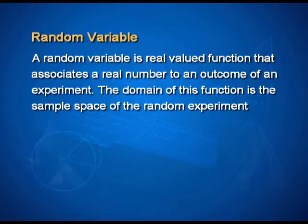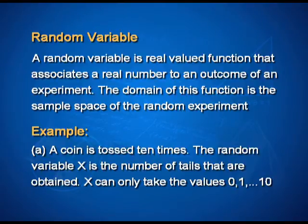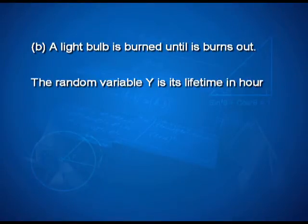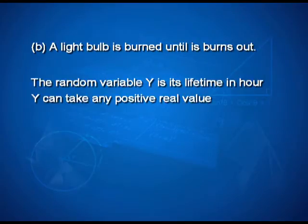Let us look at two possibilities. If a coin is tossed 10 times, then the random variable will take values which are the same as the number of tails obtained. So x can take values from 0 to 10. If I have a light bulb which is burned until it burns out, and random variable y represents its lifetime in hours, then y can take any positive real value.